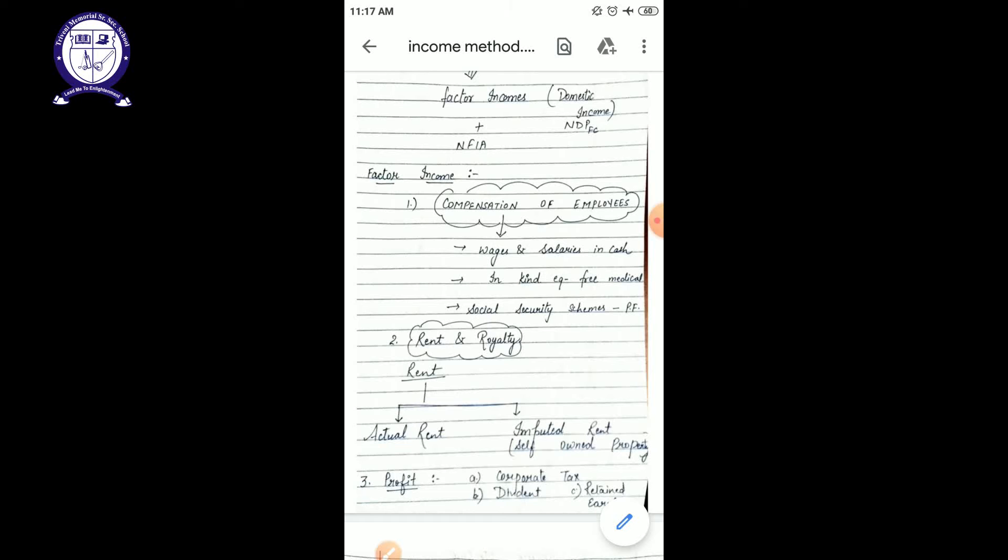In profit, profit is subdivided into three parts. Why it is divided into three parts? Because whatever profit earned by the factory or company, they distribute it in the form of three elements. First one is your corporate tax, that means the tax which we have to pay to the government because of our profits. We can also call it as your profit tax.